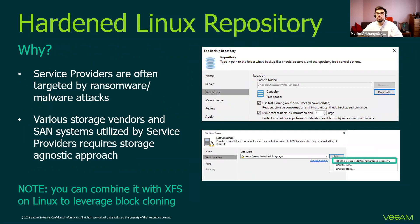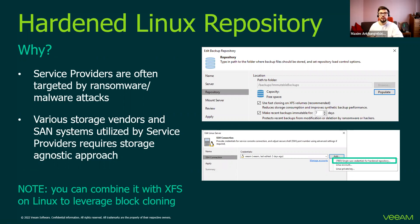Speaking about ransomware: we have a hardened Linux repository which has immutability enabled — similar to AWS S3 and S3-compatible storages with these advanced features. This does not allow anyone to modify your backups within the specified timeframe. The hardened Linux repository is supported by Cloud Connect and by Veeam Backup and Replication. If by any chance you would like to remove this data from your repository, it will not be possible because it will be locked — Veeam Backup and Replication and Veeam Cloud Connect don't have root access and run on specific credentials where you can write data but cannot change it. When retention is applied, data will be removed, but if the retention chain is not higher than the immutability period — for example, seven days — this data will not be removed with retention; it will stay on the repository.